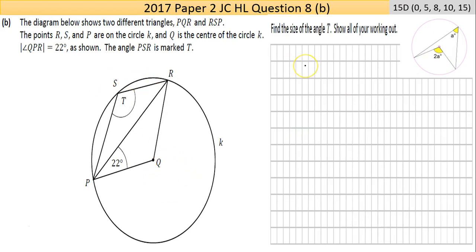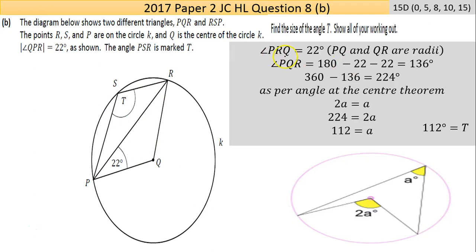So angle PRQ - the R is what matters - that angle there is also 22. Why? Because RQ is a radius and PQ is a radius, so they're equal length, which makes that an isosceles. So if this is 22, this has to be 22. Take that from 180 to get this angle here: 180 take away 22 take away 22 leaves 136.